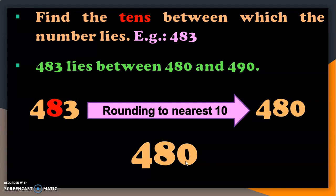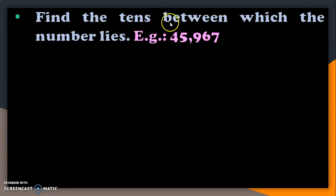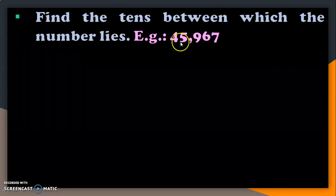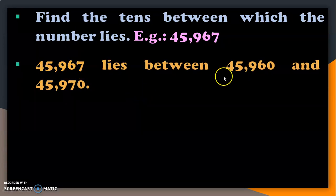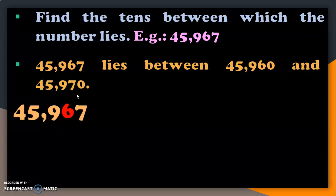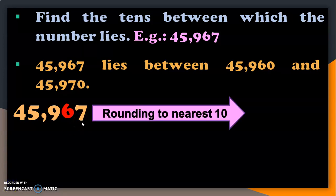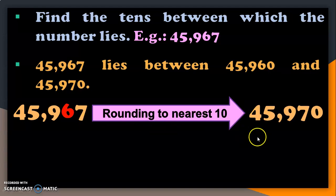If we do more examples, you will understand this concept better. Take the number 45,967. In the tens place, you have 6, and 67 lies between 60 and 70. So, 45,967 lies between 45,960 and 45,970. The target digit is 6 and the digit after it is 7, which is bigger than 5, so it is towards the upper limit. Rounding 45,967 to the nearest ten gives 45,970.